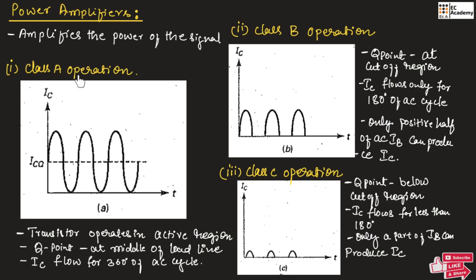To summarize: in class A operation, the Q point is at the middle of the load line, so we get the entire output waveform. In class B operation, the Q point is at the cutoff region, so we get only 180 degrees of the output waveform. In class C operation, the Q point is below the cutoff region, so only a part of the output waveform is available. This is an introduction to power amplifiers. I hope you have understood the topic. Thank you.